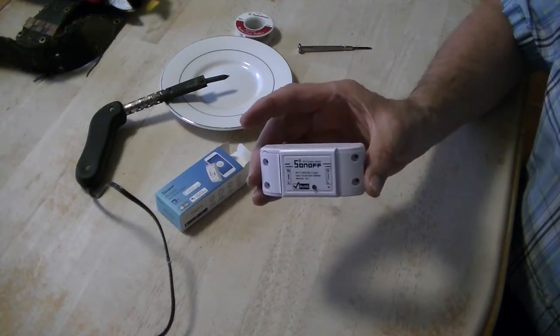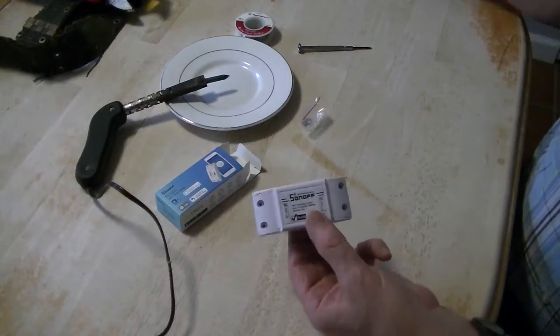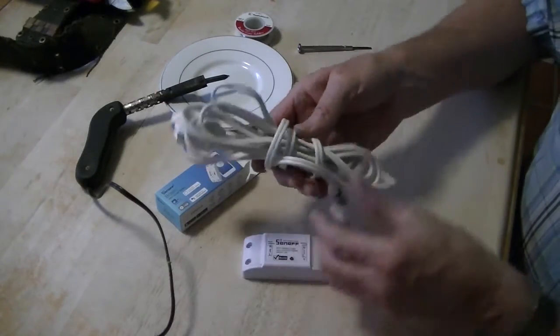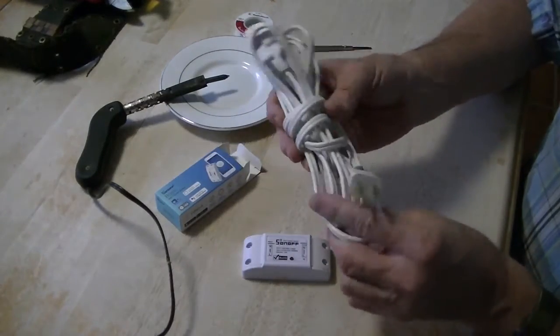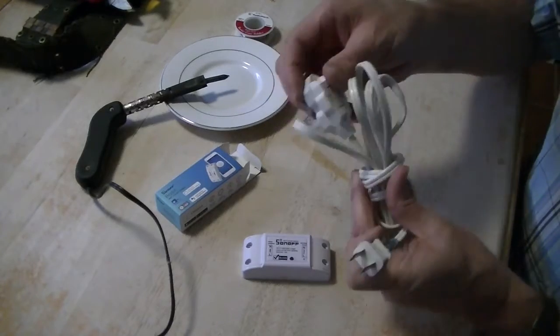What I'm gonna do is take this extension cord and cut it in half. I'm gonna use this end and this end to make an extension cord right in the middle.